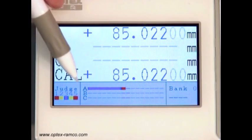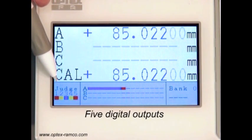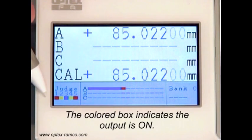You can set up to five digital outputs shown here by the color boxes. The color boxes indicate that the output is on.